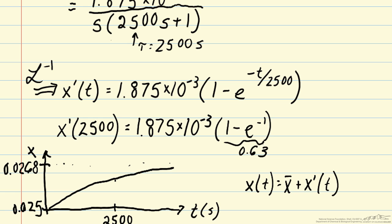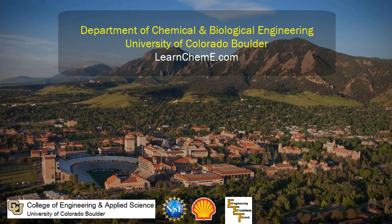Now here we had a step of 0.1, a deviation of 0.1 going from 1 to 1.1 in our inlet flow rate w1. So that's a 10% change. And then here we saw similarly a small but non-negligible change in x.